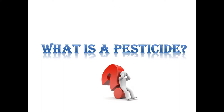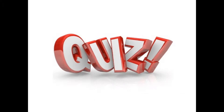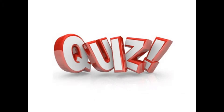Today we're going to be talking about pesticides. So let's start with the basics and learn what is a pesticide. A pesticide is a chemical used for destroying or preventing any pests. In the following quiz, we're going to test what you guys consider a pest. What are some examples of pests?